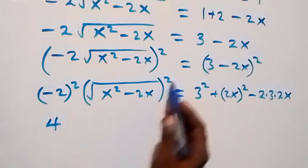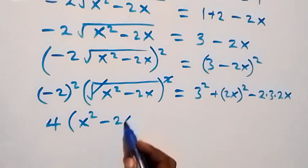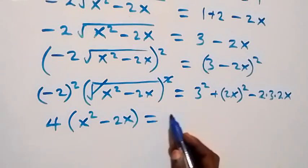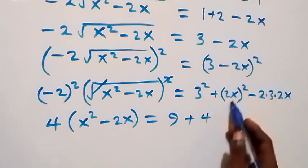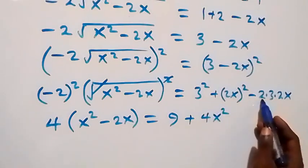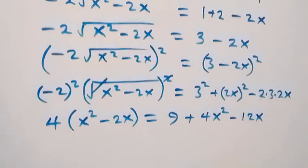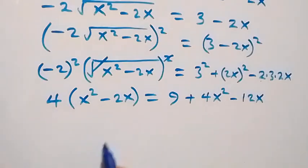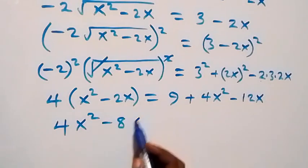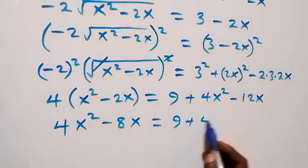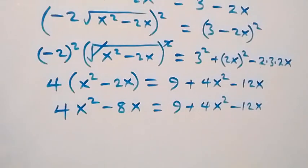When we simplify, (-2)² is positive 4, and this cancels out leaving x² minus 2x. Then equals 3², which is 9, plus 4x², then minus 2 times 3 times 2, that's 12, so minus 12x. Then we use 4 to open the bracket and we have 4x² minus 8x, now equals 9 plus 4x² minus 12x.